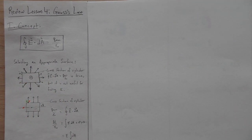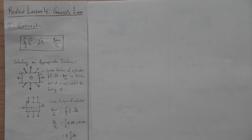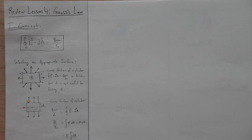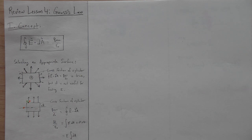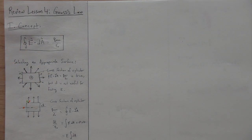We begin with the concept of Gauss's Law. This is most commonly used to determine the electric field. You're often able to find the electric field without even integrating at all — it's an easier way to find electric field than the distributed charge methods. So what does this equation mean? How does it work?